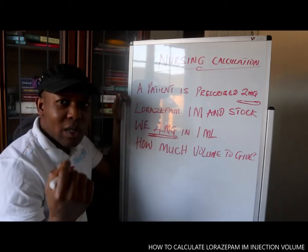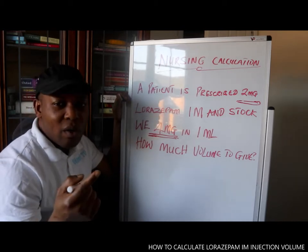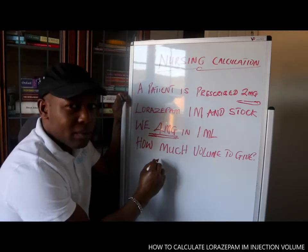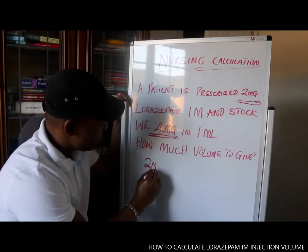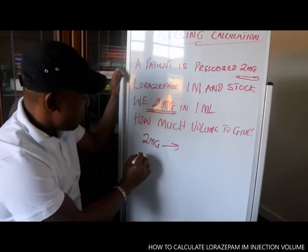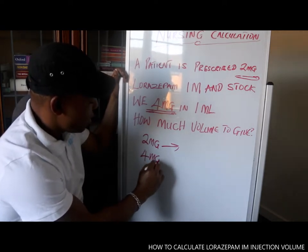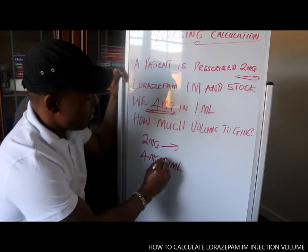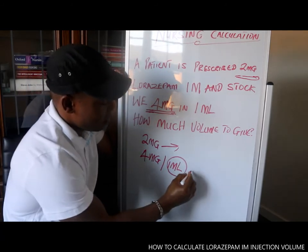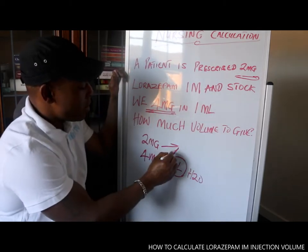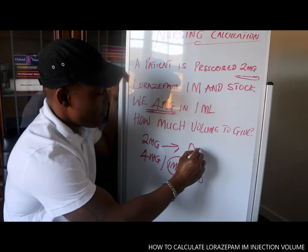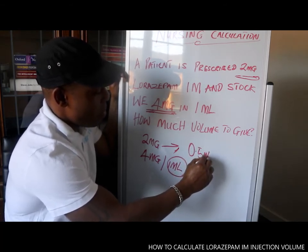First, you need to understand this formula: what we need over what we have. We need to administer two milligrams. The ampoule comes as four milligrams in one milliliter. So if you want to give four milligrams of lorazepam, you need to mix it with one milliliter of water. If you want to administer two milligrams, you need to mix it with 0.5 milliliters of water.